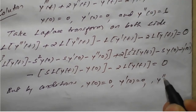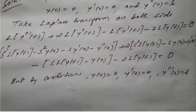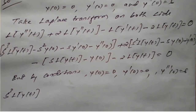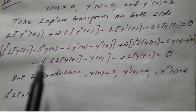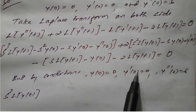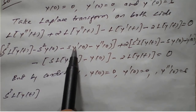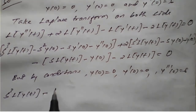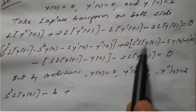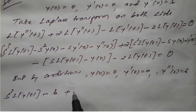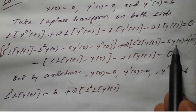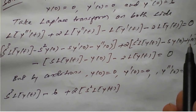Applying the initial conditions: y of 0 is equal to 0, y dash of 0 is also 0, and y double dash of 0 is 6. Since y of 0 is 0, the S squared term vanishes. Since y dash of 0 is 0, the S term also vanishes. Only y double dash of 0 is 6, giving minus 6 directly. In the second expression, y of 0 is 0 so that term becomes 0 as well.